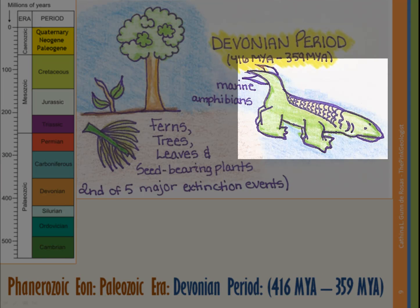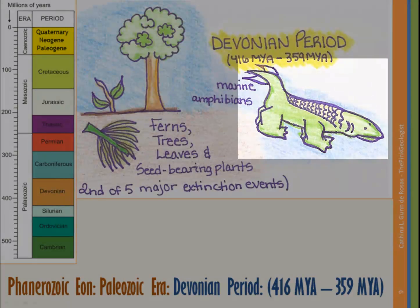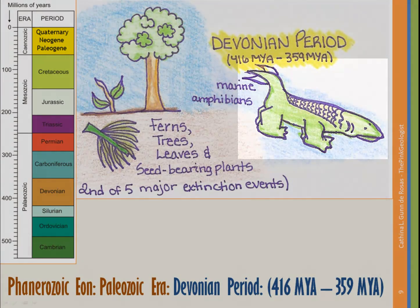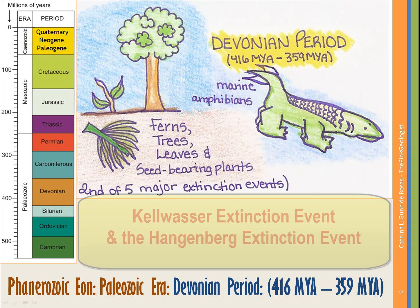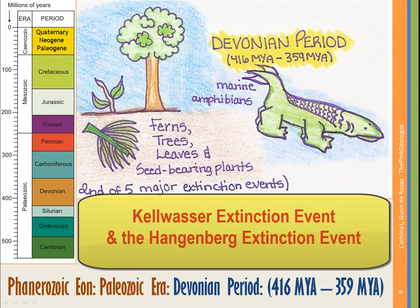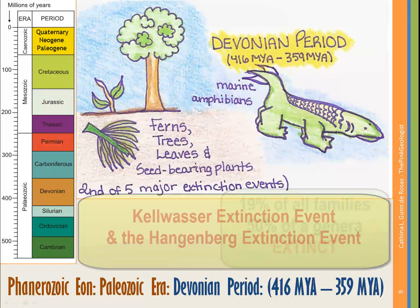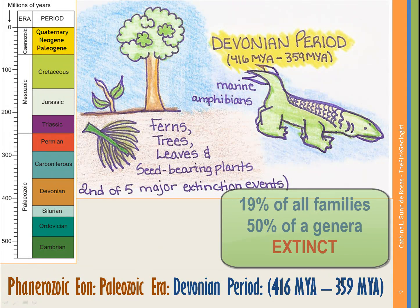The Devonian period is also where the first amphibians appear, though these amphibians are still aquatic and not yet on land. At the end of the Devonian, two major extinction events combine as the second of the five major extinction events: the Kelwasser event and the Hangenberg event. Together, 19% of all families and 50% of all genera went extinct on Earth, marking the end of the Devonian period.